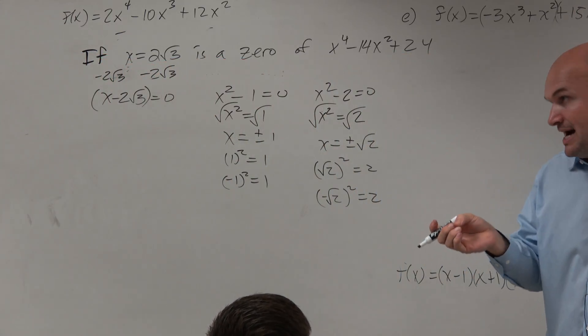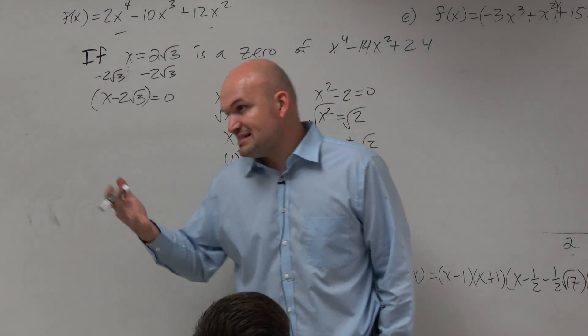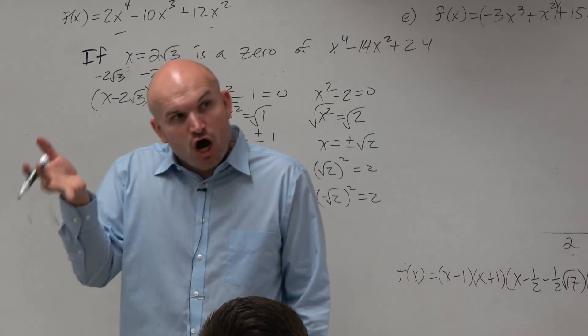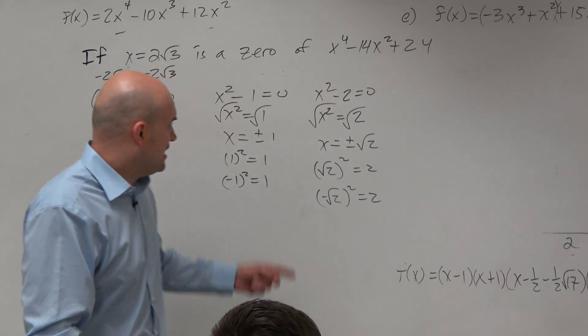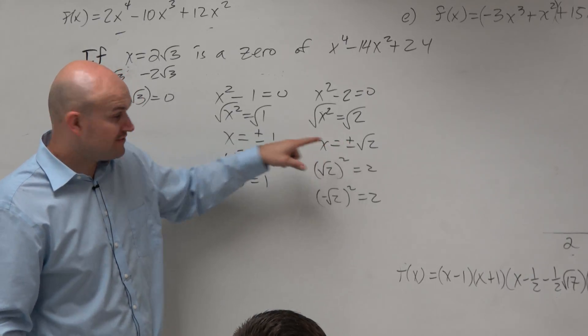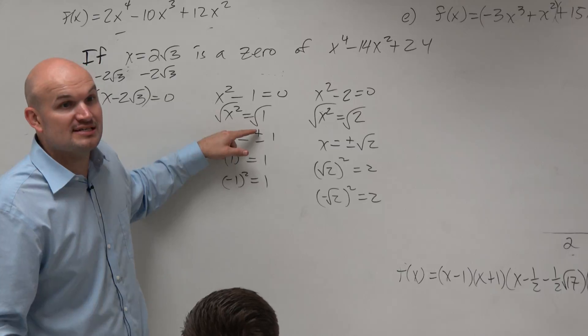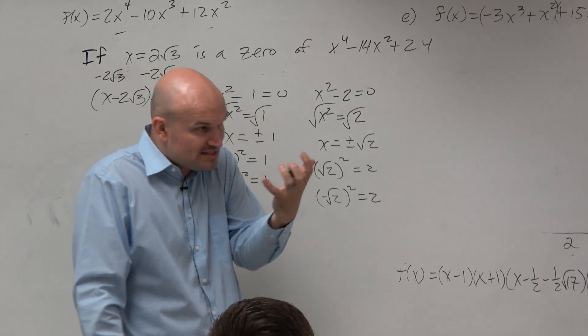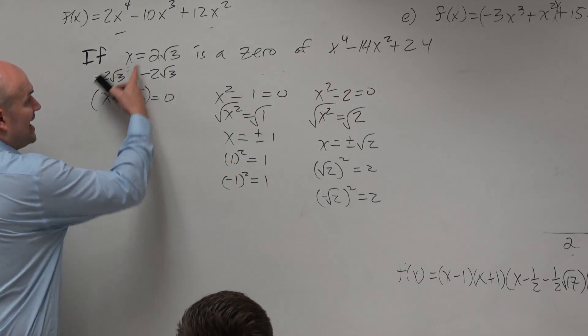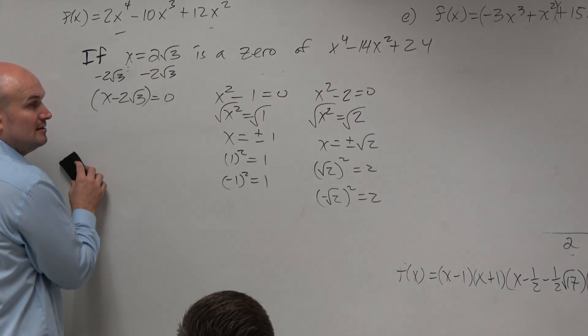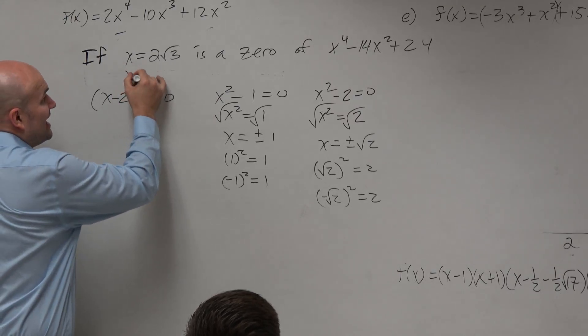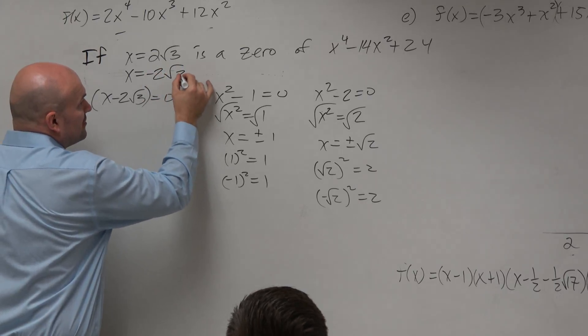So what that means is whenever you have a zero, or as a factor, negative square root, then the positive square root also exists. They come in what we call conjugate pairs. Wherever there's a positive, there's a negative. Wherever there's a negative, there's a positive. They are conjugate pairs, always going to be connected. So in this problem, if I'm given x = 2√3, then what else am I given? x = -2√3.